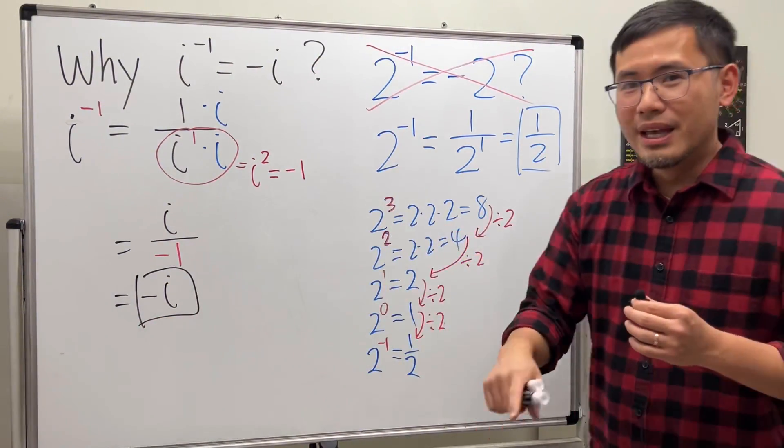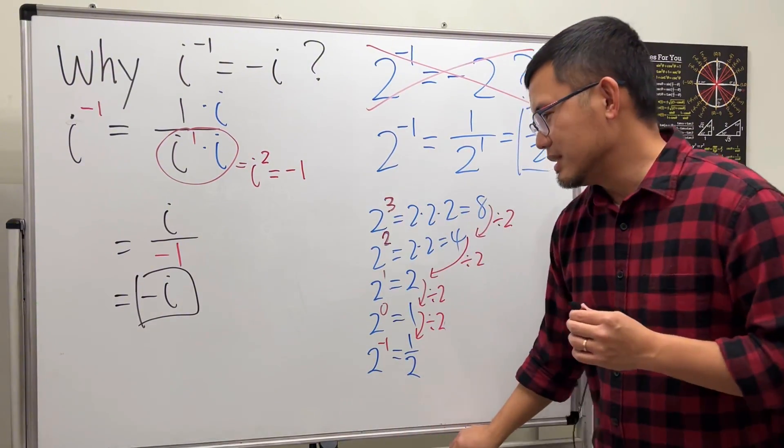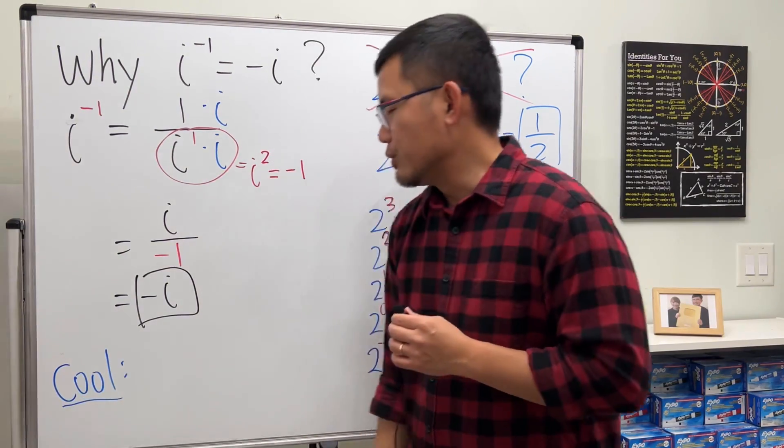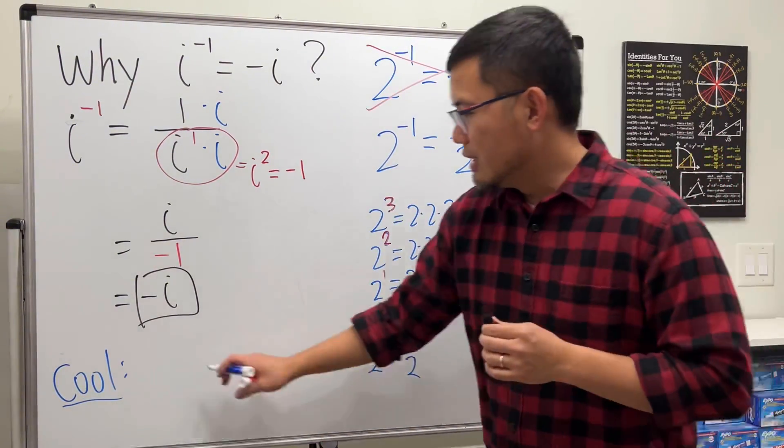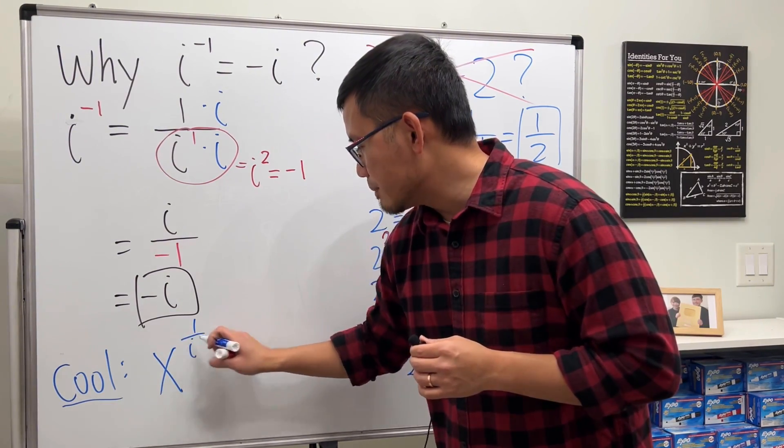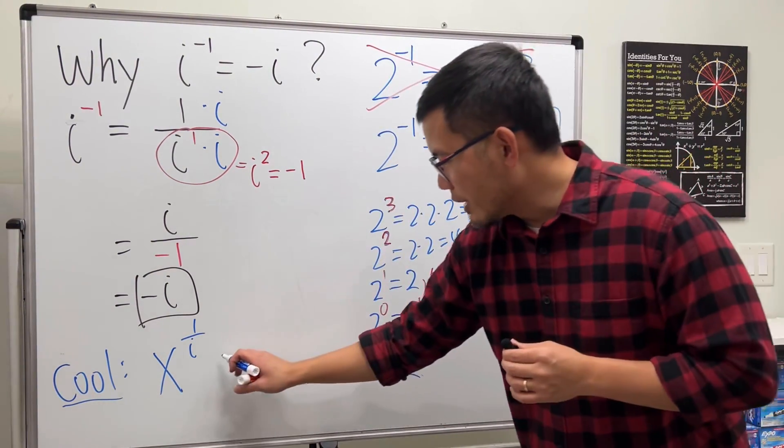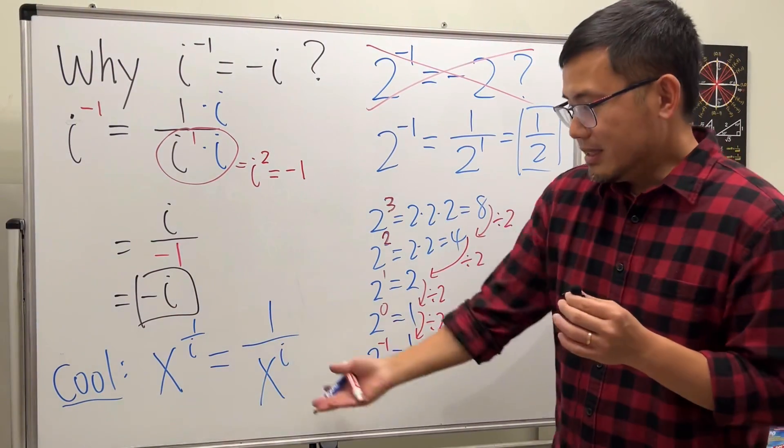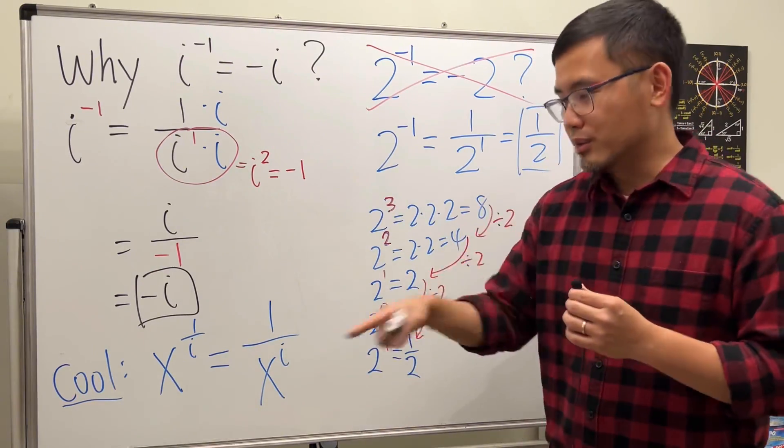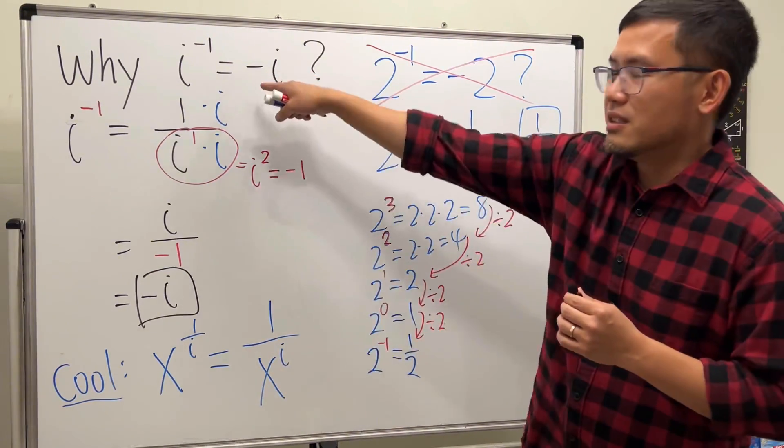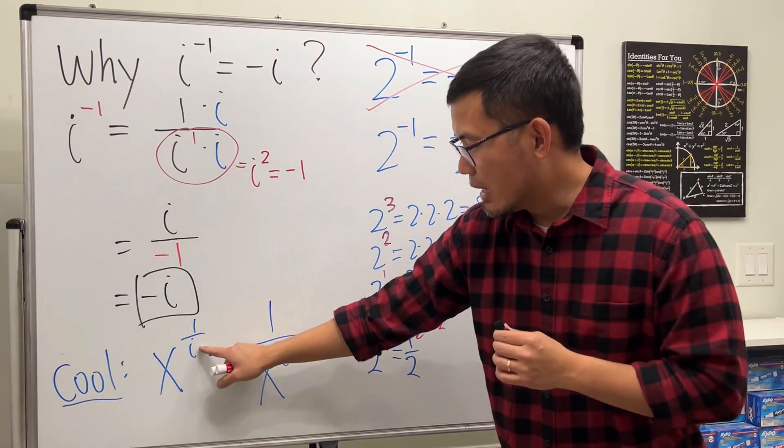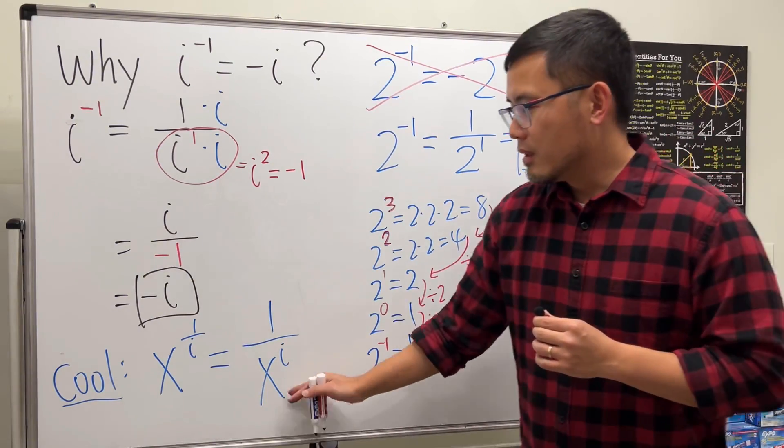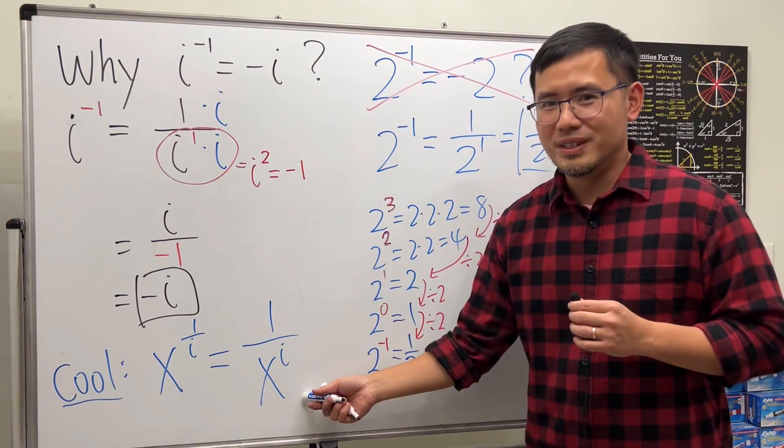I think it's super cool. Before we go, I want to show you guys what is even cooler. This is super cool, and I will leave this to you guys to prove it. If you have x to the 1 over i power, this is actually equal to 1 over x to the i's power. I think it's pretty good looking. We have the 1 over i power, and all of a sudden this becomes 1 over x to the i's power. Why is this true? Go ahead and try to figure this out.